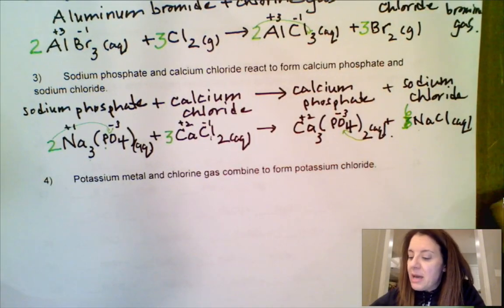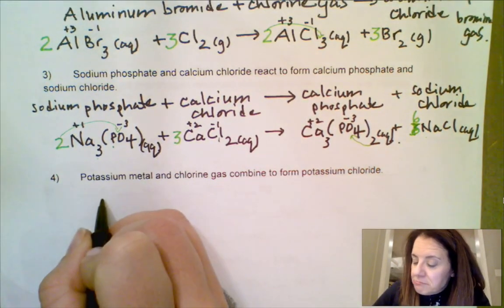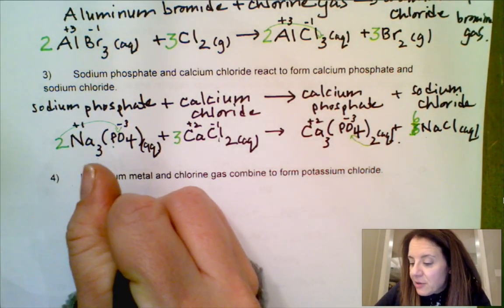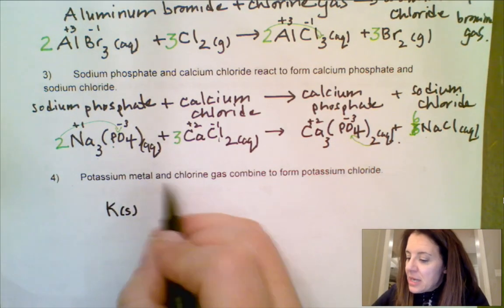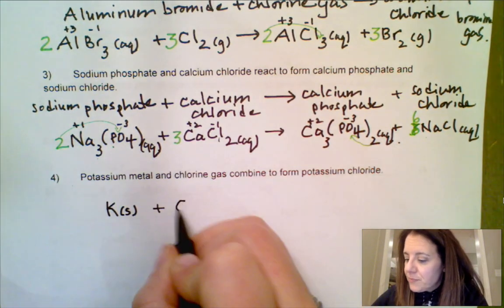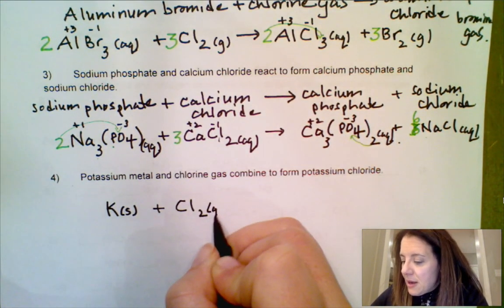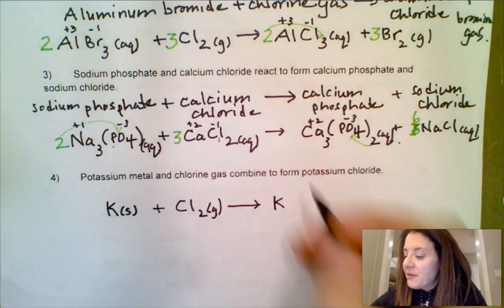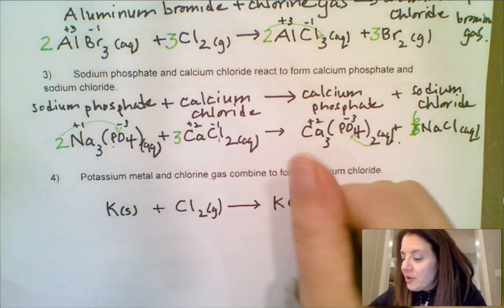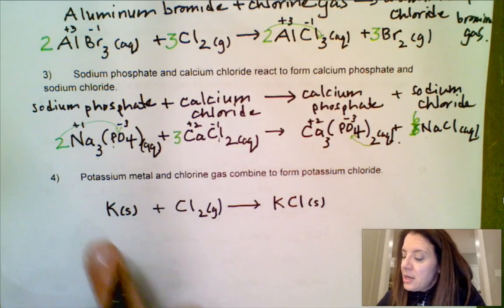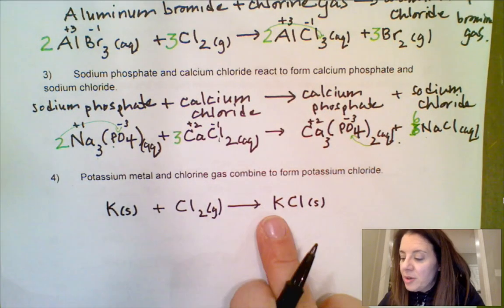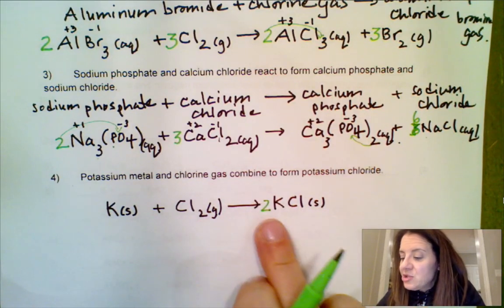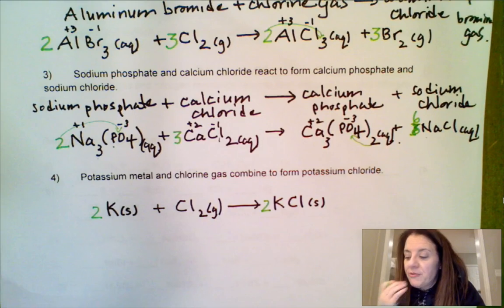Next: potassium metal and chlorine gas. I'll go straight to the balanced equation. Potassium is a solid single element — not a diatomic — plus Cl2 gas, which is one of our HOFBrINCl diatomics. It combines to form potassium chloride, which is just a solid since a solid is coming together with the gas without being dissolved. Checking: one potassium and one potassium; two chlorine on the left but one on the right. So put a two in front of KCl, which changes the potassiums, so put a two in front of K as well.